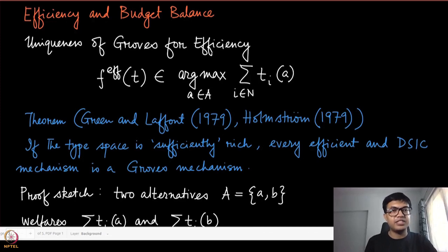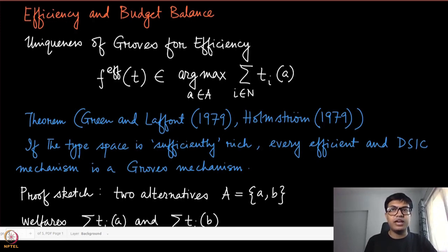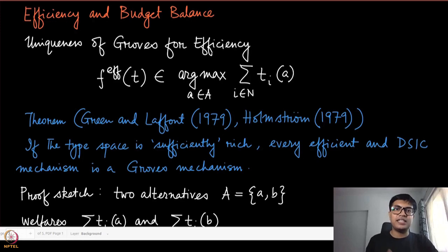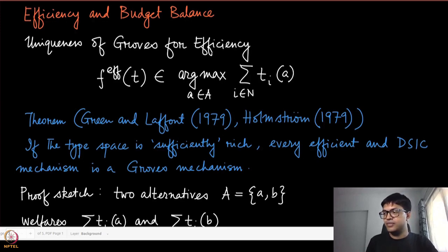We have discussed efficiency to a very large extent in the second part, the mechanism design part of this course. We have also seen when and where it can be made budget balanced, and in particular we have looked at auction settings where we tried to make the auction budget balanced and we failed. Here we are going to see that there is an inherent tension between efficiency and budget balance. This is a result due to Green and Laffont.